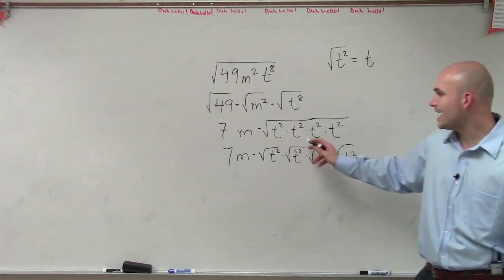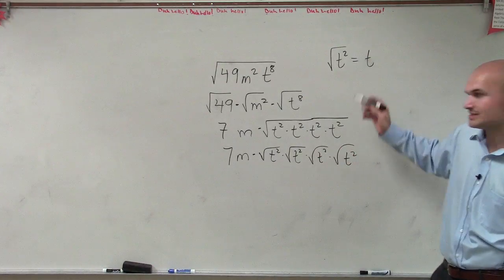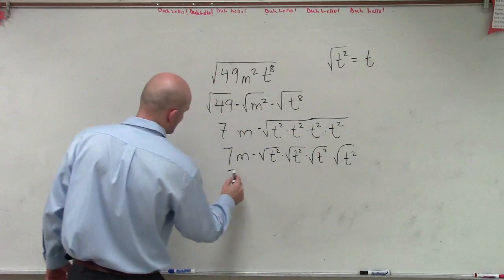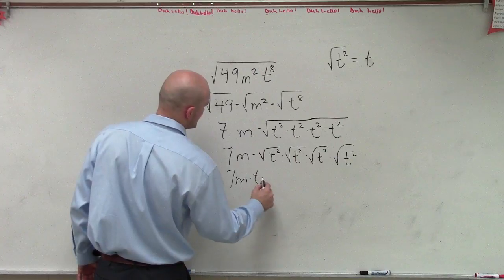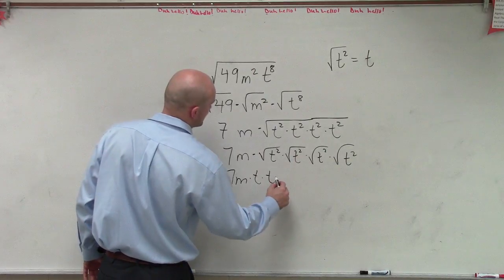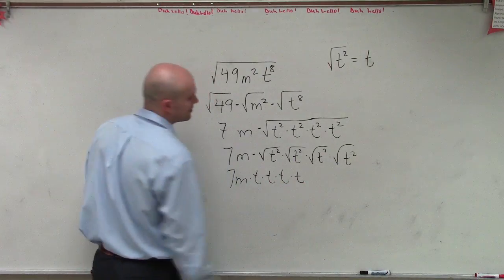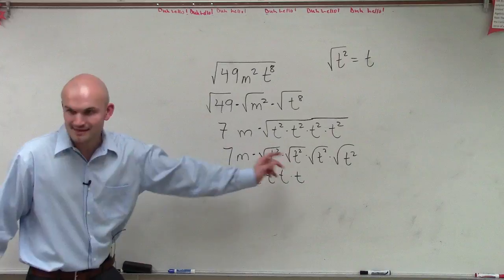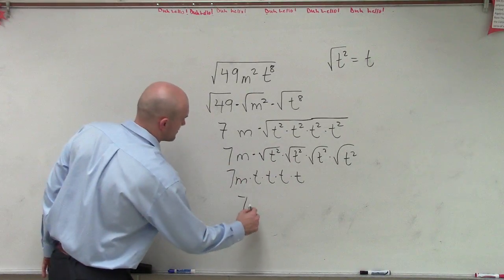Now I know what the square root of t squared is — that's t. So then this problem is going to be 7m times t times t times t times t, which is t to the fourth. So the answer is 7m t to the fourth.